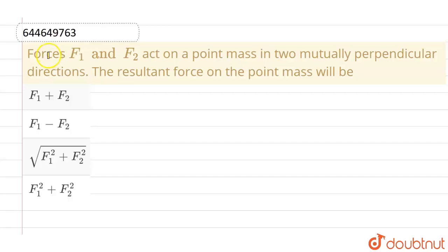Hello everyone, if we talk about this question, this given question is forces F1 and F2 act on a point mass in two mutually perpendicular directions. The resultant force on the point mass will be, and the given options are F1 plus F2, F1 minus F2, root over F1 square plus F2 square, and the last option is F1 square plus F2 square.